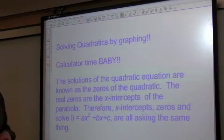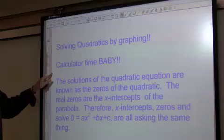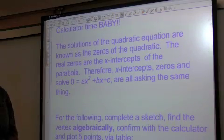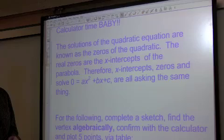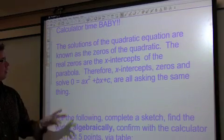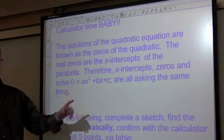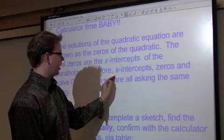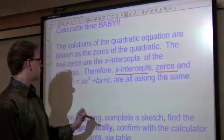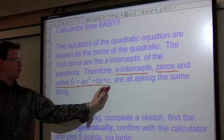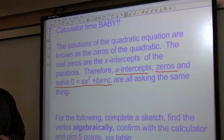Unit 3, it's solving quadratics by graphing. Here you can see it says the solutions of the quadratic equation are known as the zeros of the quadratic. The real zeros are the x-intercepts of the parabola. Therefore, I want you to write out the underlying x-intercepts, zeros, and solving this are all asking the same thing.